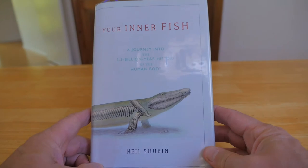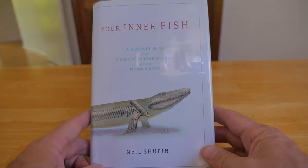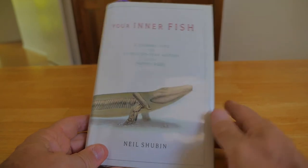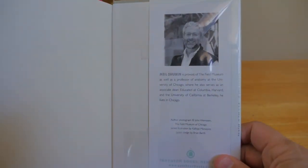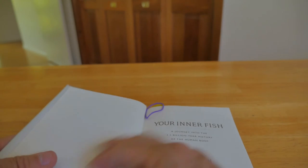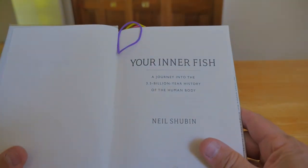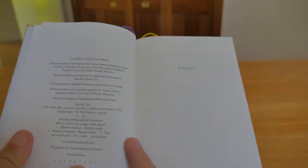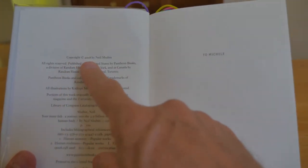Your Inner Fish, A Journey into the 3.5 Billion Year History of the Human Body by Neil Shubin. So there's the back. I think Neil, here's Neil right there. It looks like he's from the Field Museum in Chicago. So let's have a look at this book. All right. Well, there it is. Your Inner Fish, A Journey into the 3.5 Billion Year History of the Human Body. And it's copyright 2008.